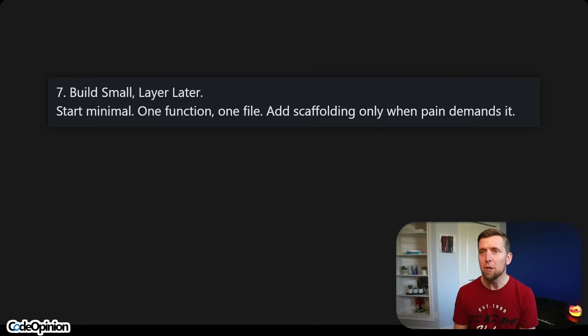Number seven: build small, later later. Start minimal — one function, one file — add scaffolding only when the pain demands it. In other words, YAGNI: you aren't gonna need it. And KISS: keep it simple, stupid. I'll have a link in the description to a video I've done on YAGNI and what I call creating useless abstractions. Don't create code for something in the future for a problem you might not ever even have.